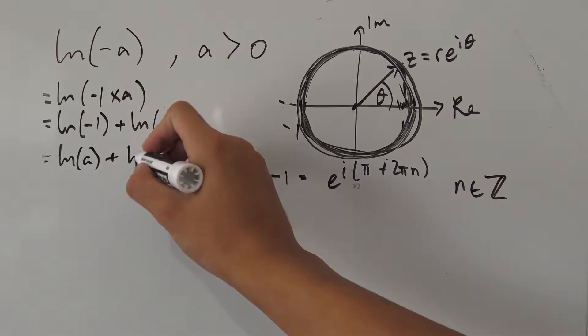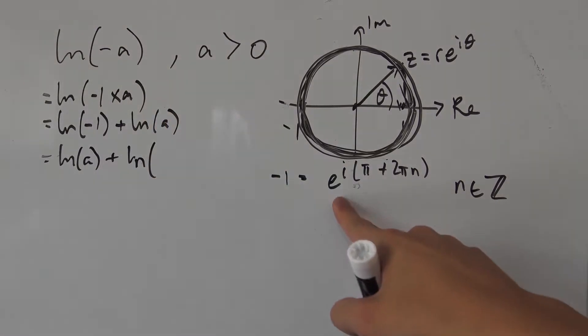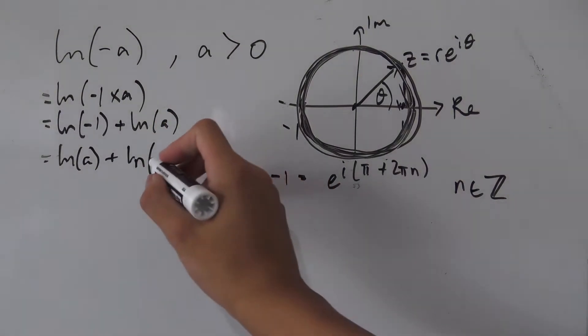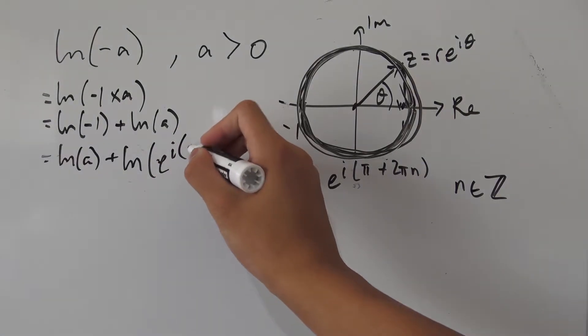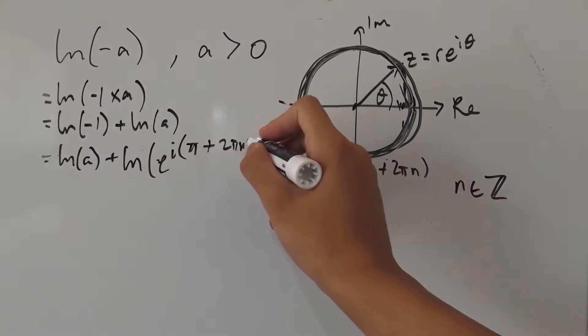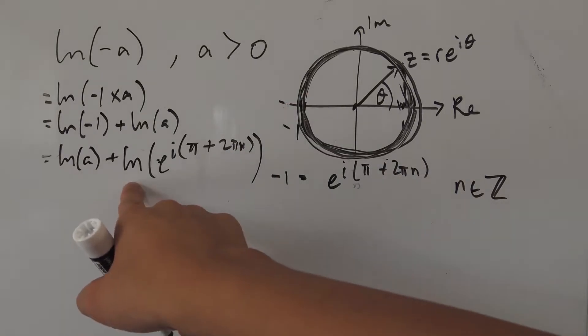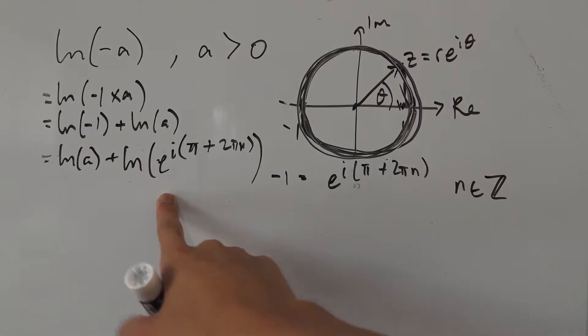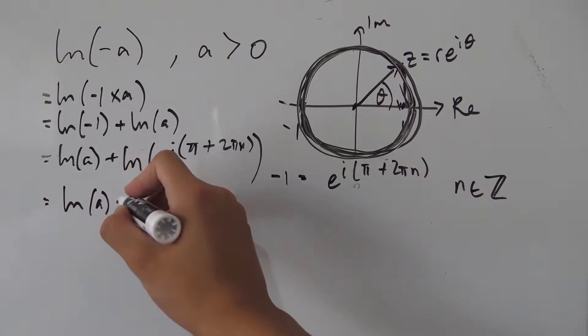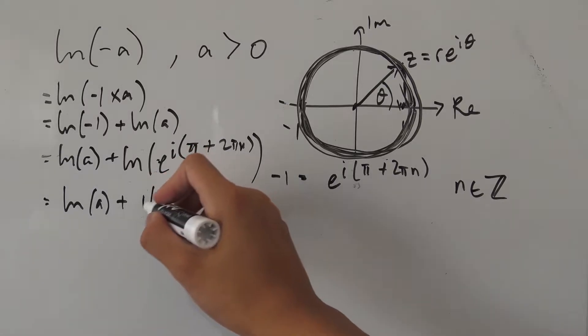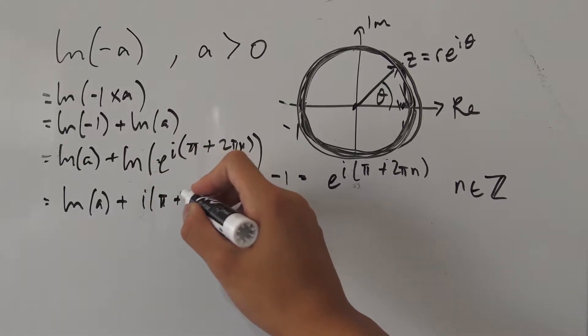So natural log of negative one—but negative one is nothing but this thing right here that we just found. So that's e to the i times pi plus 2 pi n. And you may notice something: the natural log and the e will cancel.